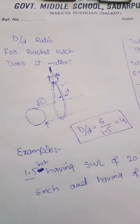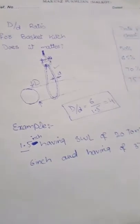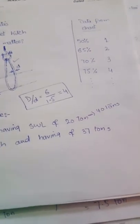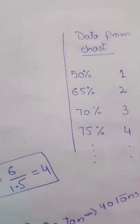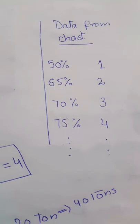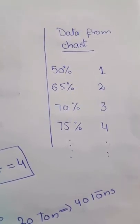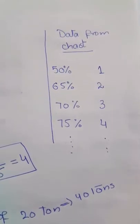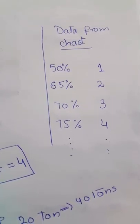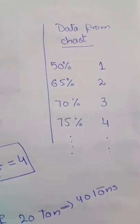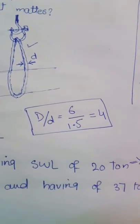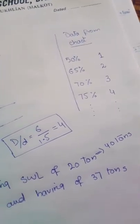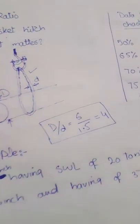Now our load is 37 tons. This is data from a chart. At one D/d ratio, the capacity of the hitch is 50%. When we have two D/d ratio, then it is 65%. But we have in this case the D/d ratio is 4, so the 75% capacity of this sling is safe for lifting the pipe.